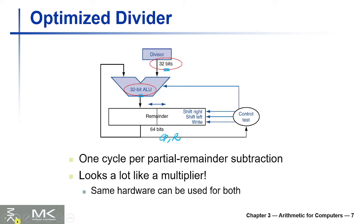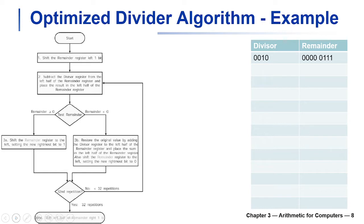Here is the improved circuit: a 64-bit register that holds both the quotient and the remainder at the same time. The divisor is 32 bits. In the beginning, the remainder register has 32 zeros and 32 bits of the dividend. The arithmetic operation is only 32-bit, so we decrease the circuit size by half.